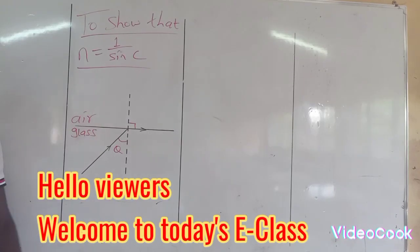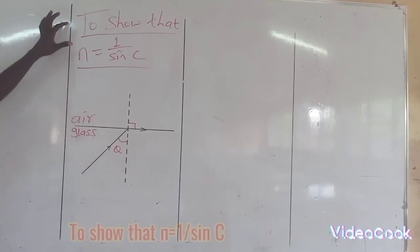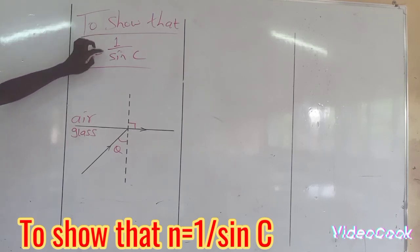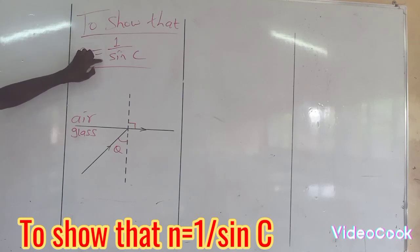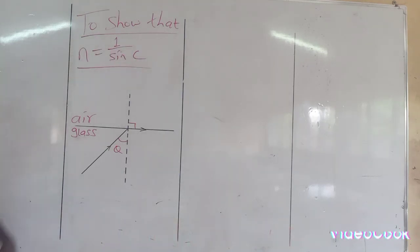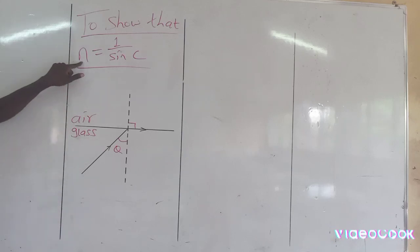Hello viewers, welcome to today's e-class. So today we are going to show that refractive index is given by 1 over sine c, whereby c is the critical angle. So to show that, refractive index is 1 over sine c.